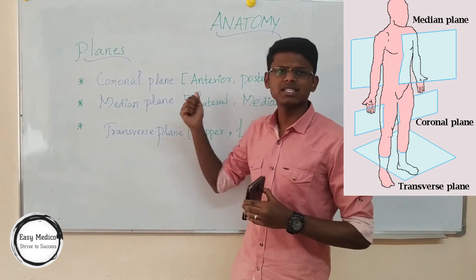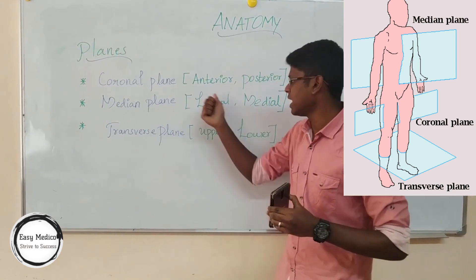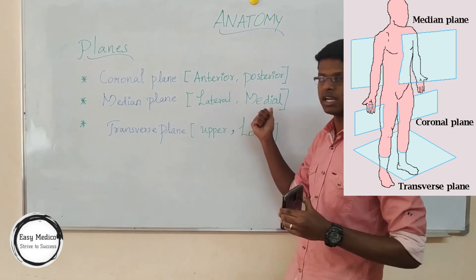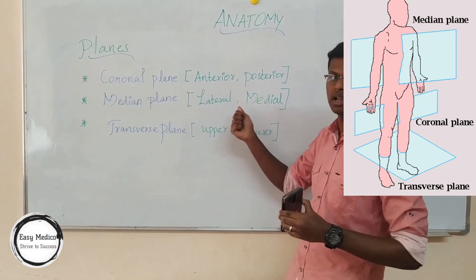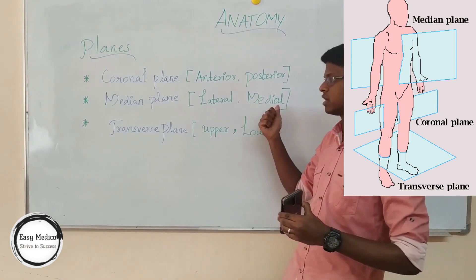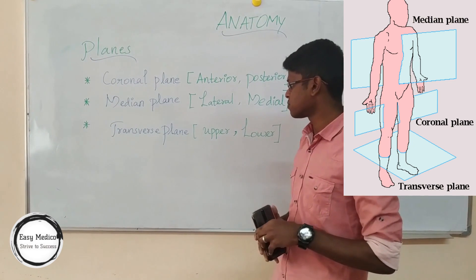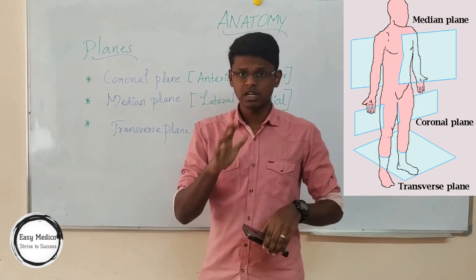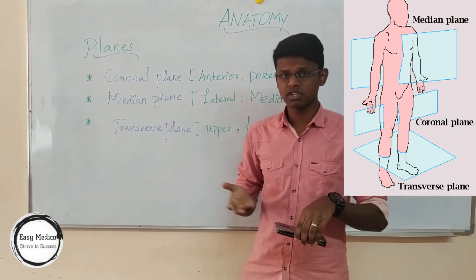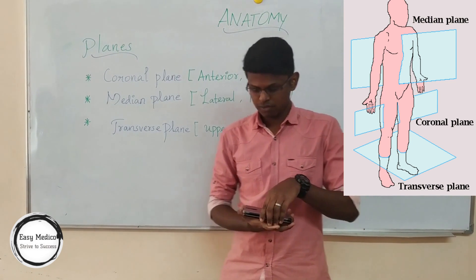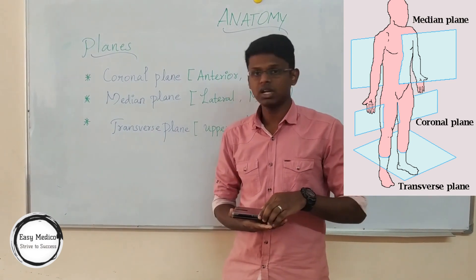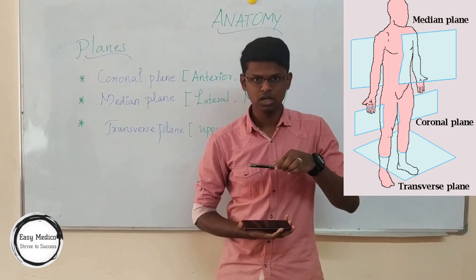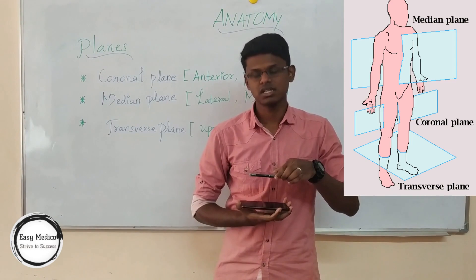Lateral — you can differentiate it like 'L' which stands for left, so lateral is left. Medial is the opposite, which is right. Right of the median plane is medial; left of the median plane is lateral. Now, what is the transverse plane? When the transverse plane passes through, it differentiates upper and lower segments — upper and lower. This is known as the transverse plane.